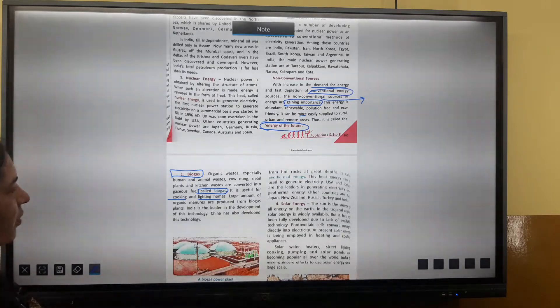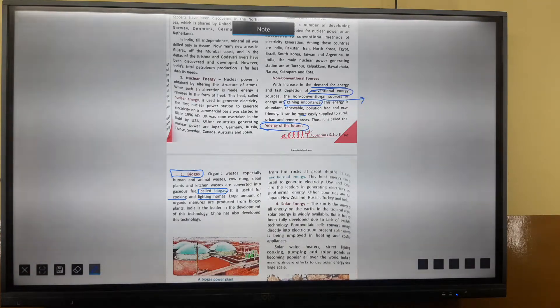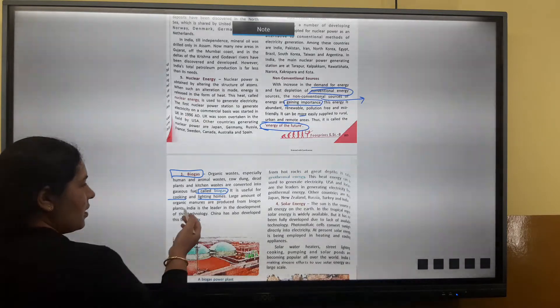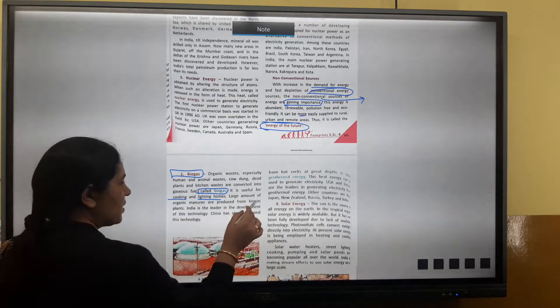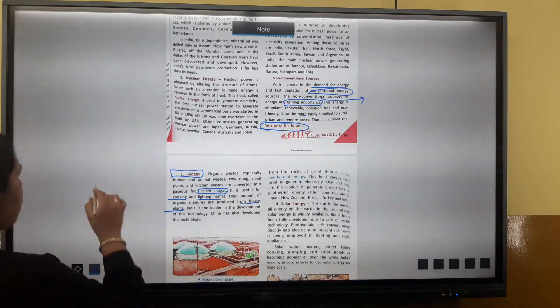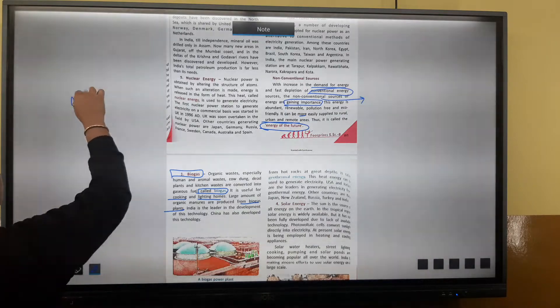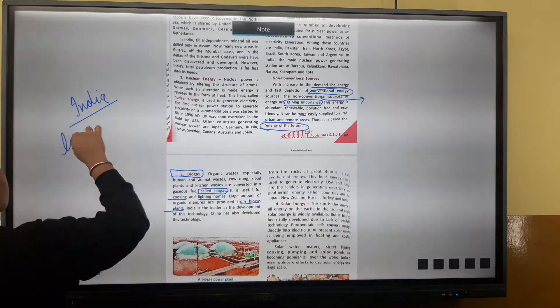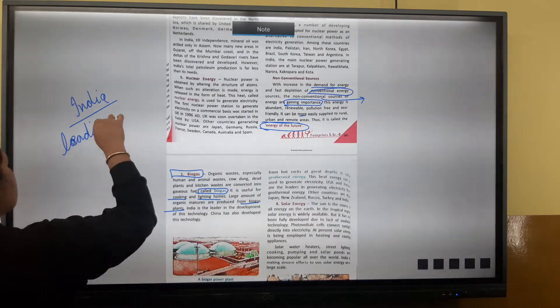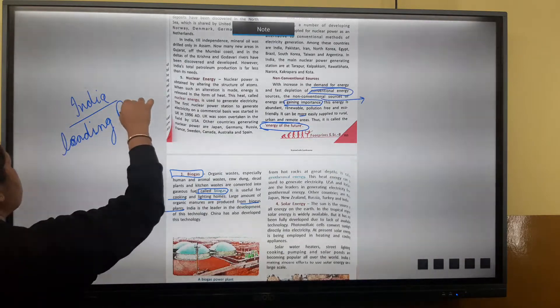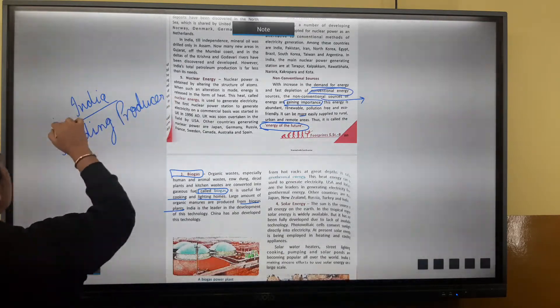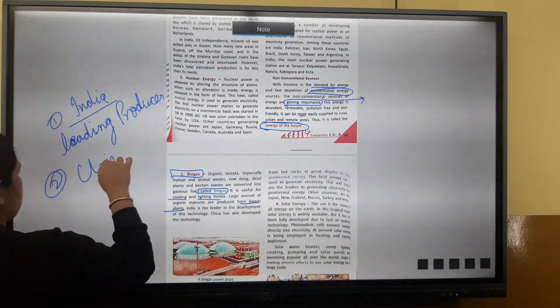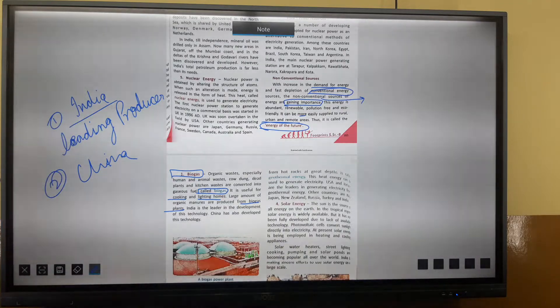Large amounts of organic minerals are produced from biogas plants. India is a leader in the development of this technology. China has also developed this technology. India is the leading producer, with China second in biogas production technology.